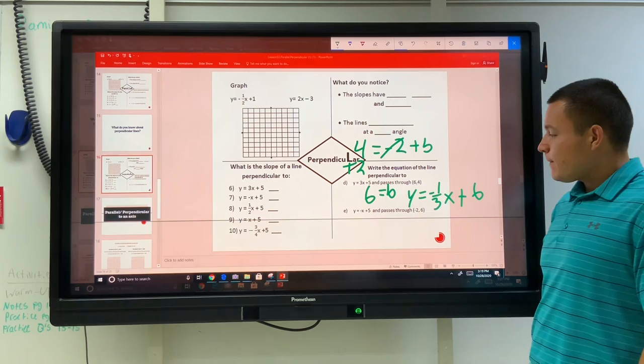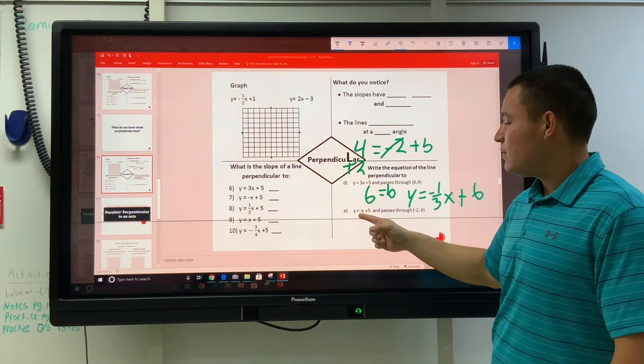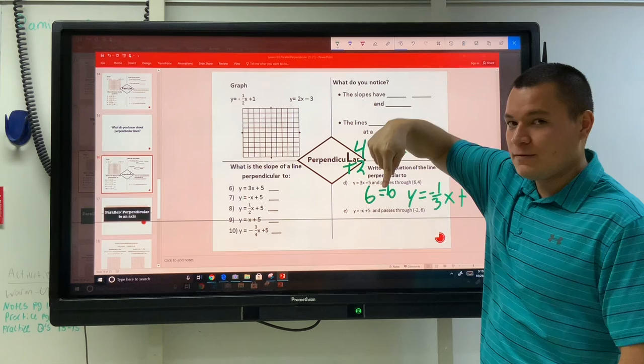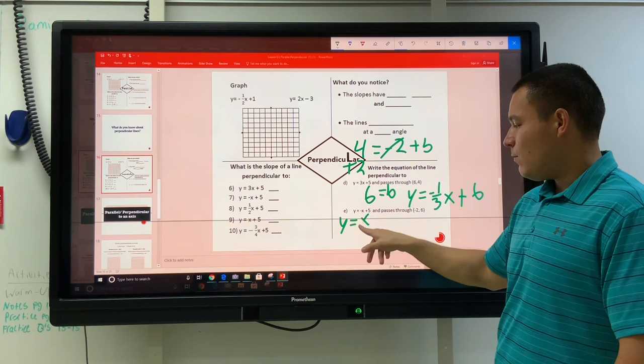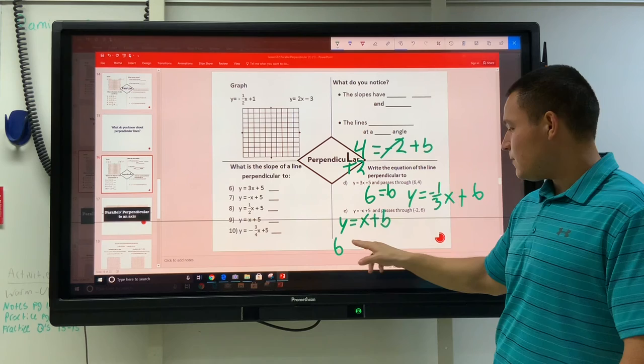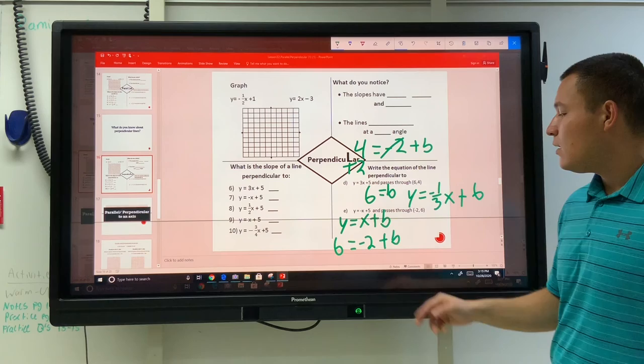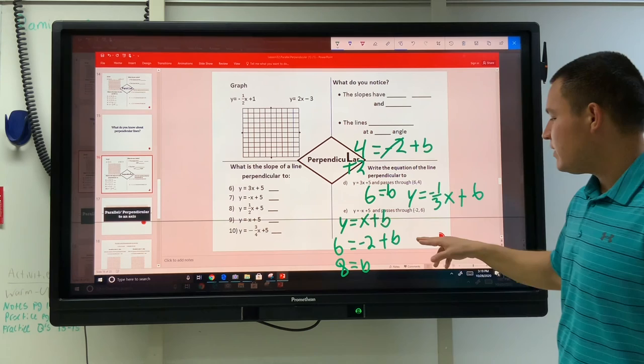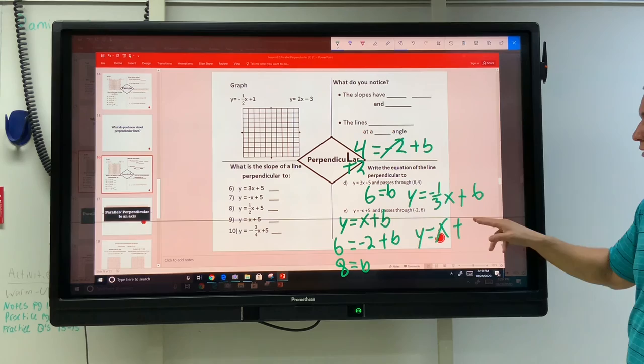Last one. Easy one. That slope, right now it's a negative 1. So if you flip 1 over, it's still 1. Right now it's negative, so we're going to change the sign to be positive. Y equals x plus b. Then throw this in here. 6 for y, negative 2 for x, plus b. Add the 2. B equals 8. Second equation, y equals x plus 8. Done.